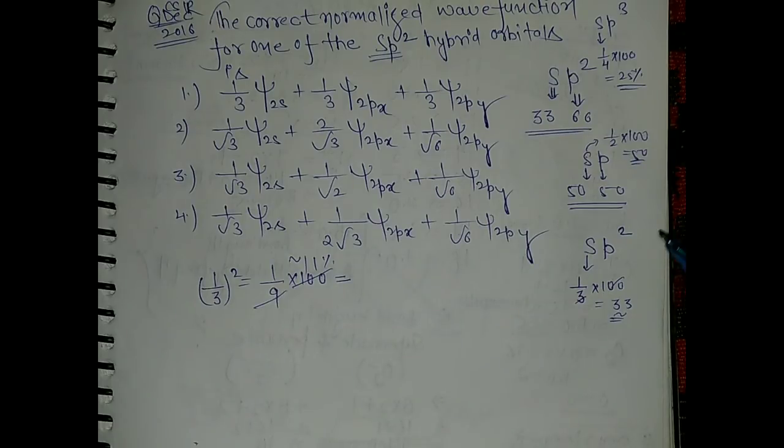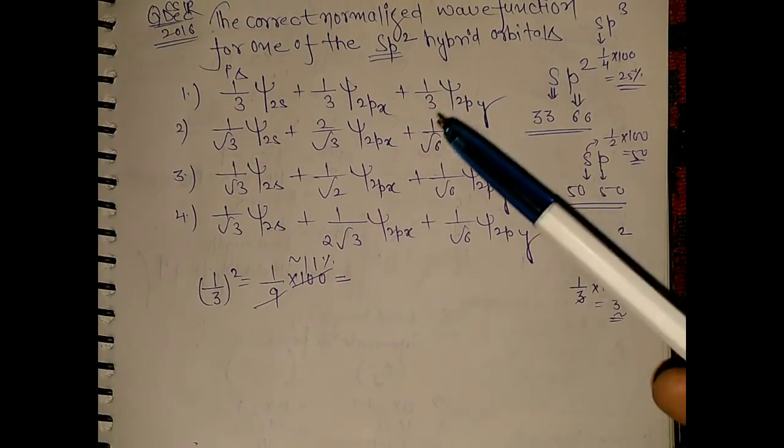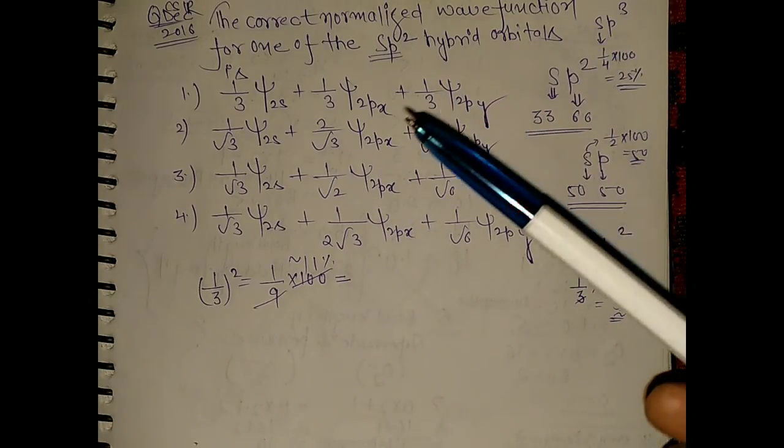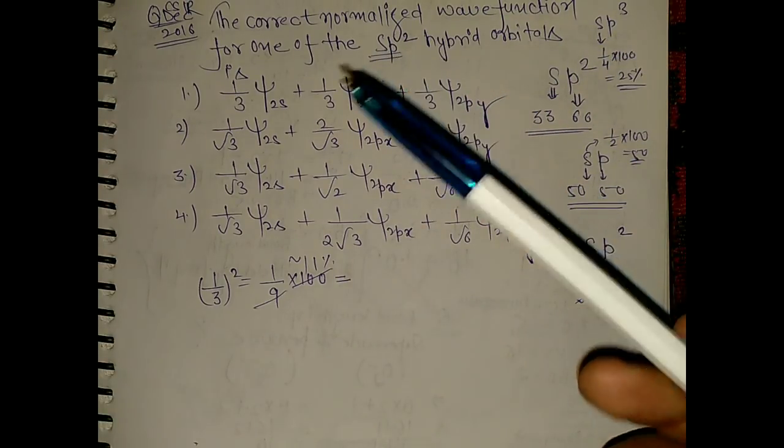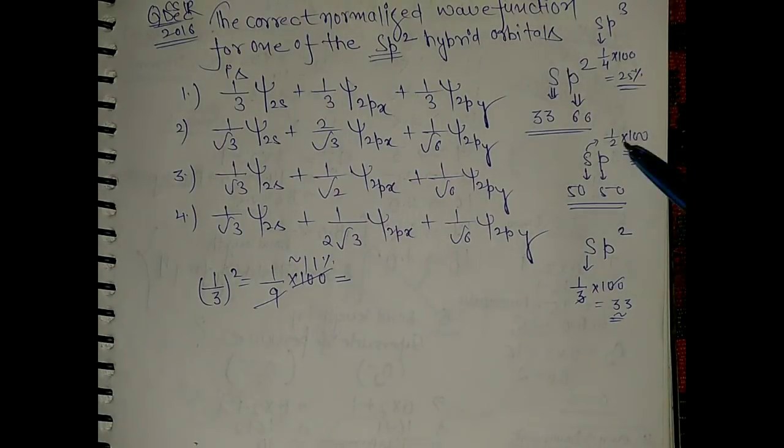Hello everyone, so this question was requested by one of you: how to calculate the correct normalized wave functions if the hybridization is given. Now I have pre-written it because I forgot to start recording.